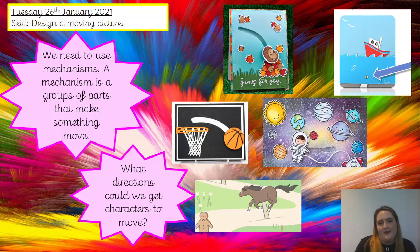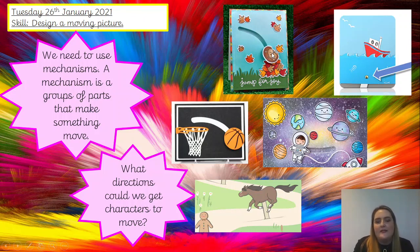Let's have a look together. Here in this first picture we have a hedgehog. You can see he's going up and down — although it's at an angle, it's up and down — and he's jumping into the pile of leaves. We can see that slip of paper there and he can move up and down. The same with this one: we've got our basketball and although it's at an angle, it's going up and down into the hoop.